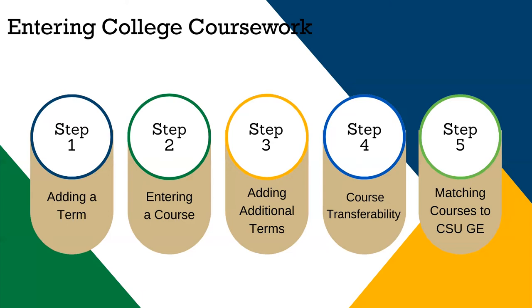This video will cover the following five steps: adding a term, entering courses, adding additional terms, course transferability, and matching your coursework to the Golden 4 requirements.